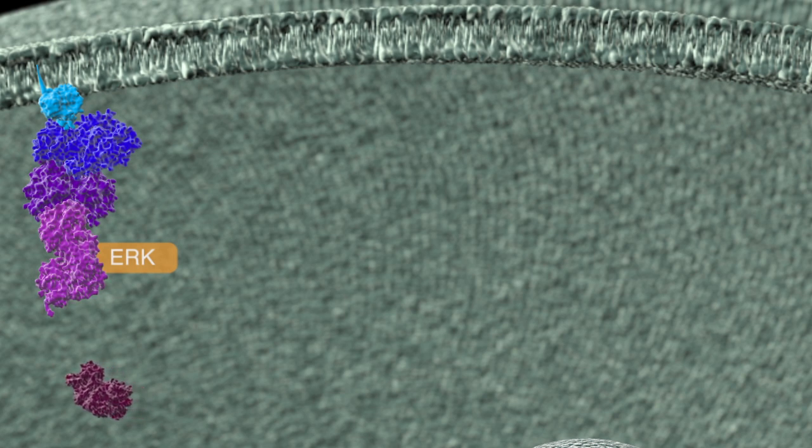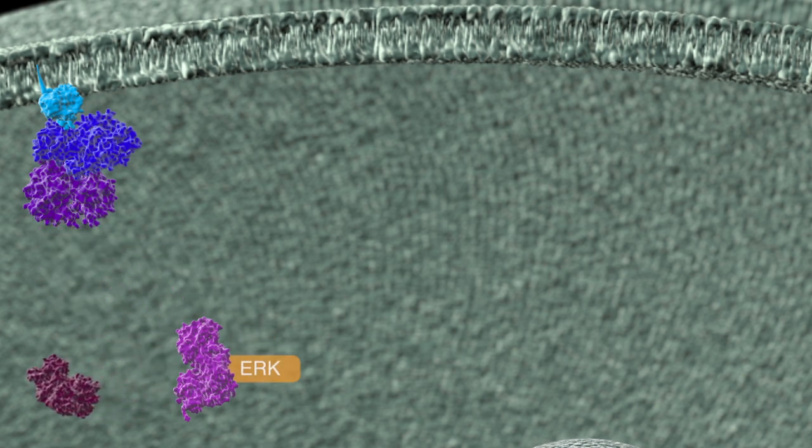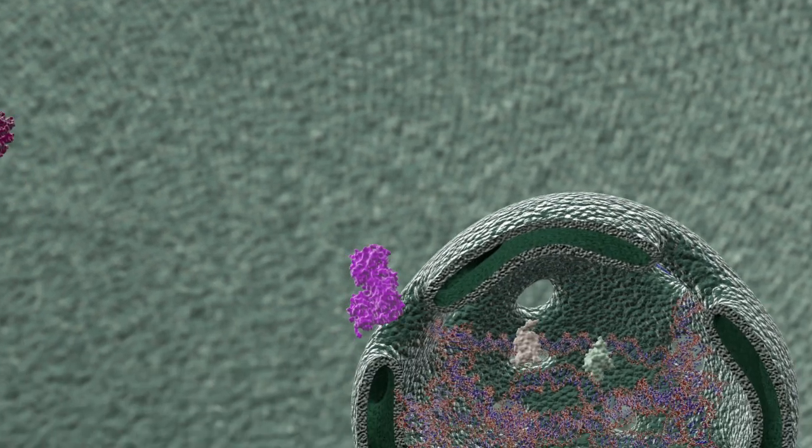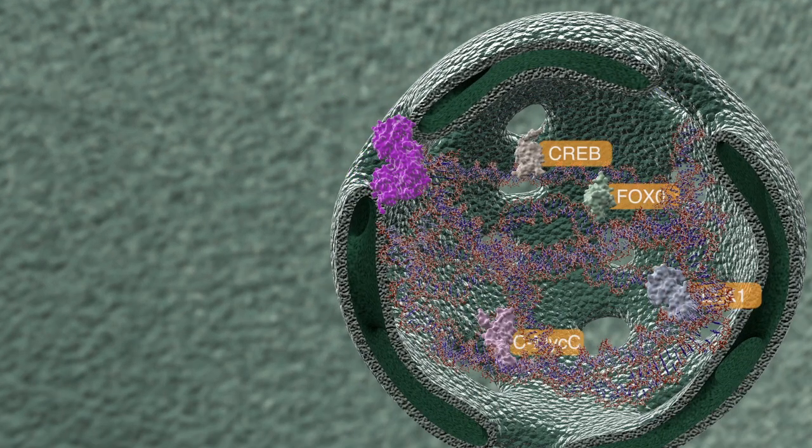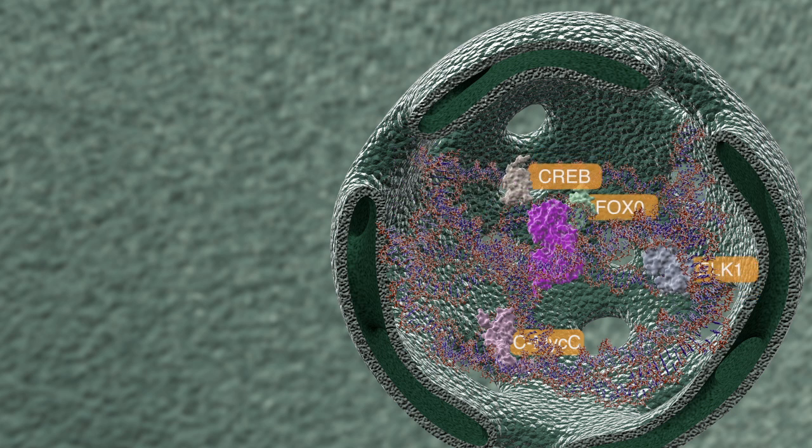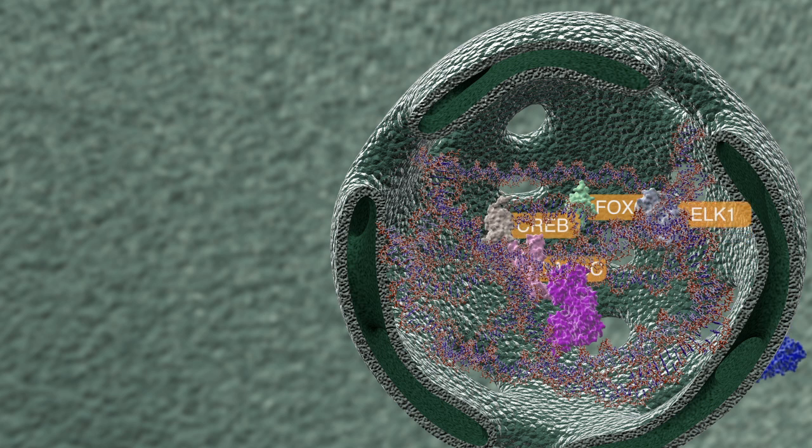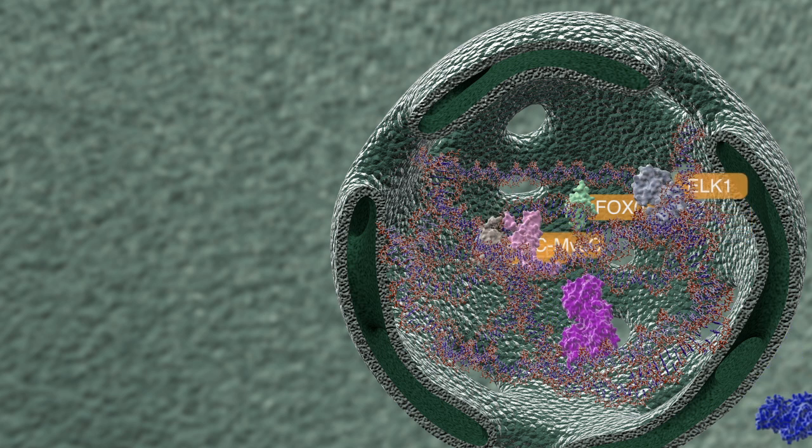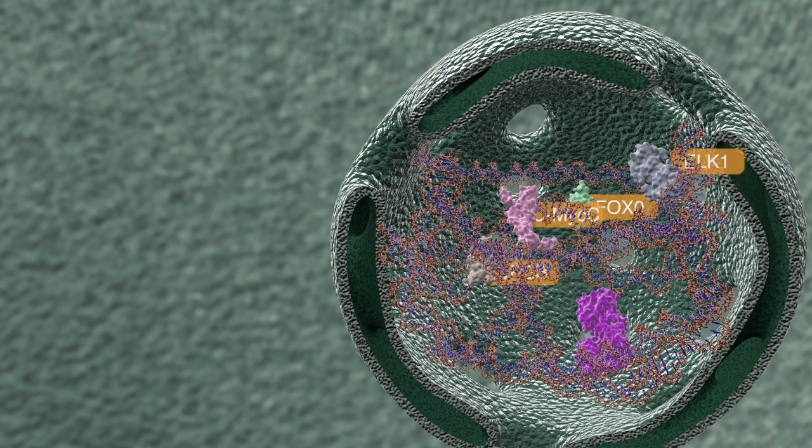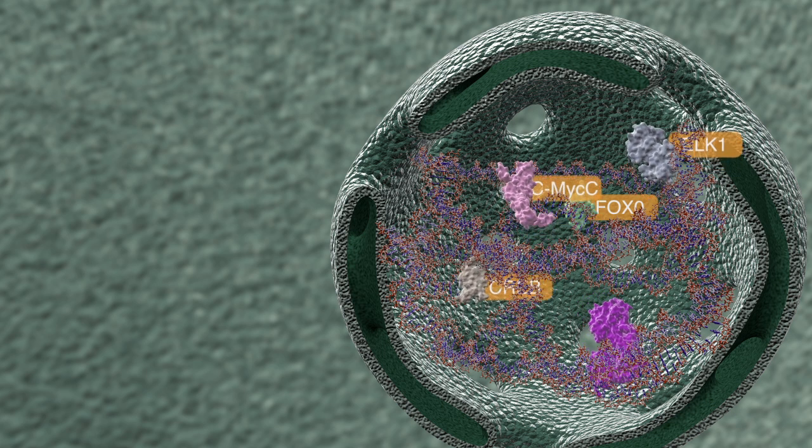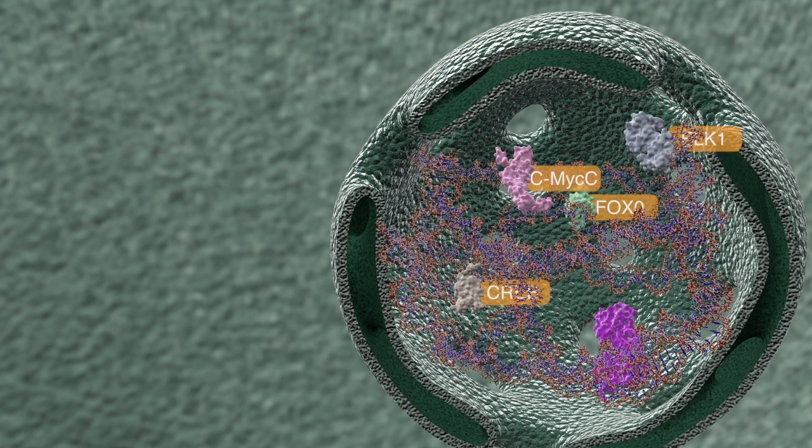These kinases are serine-threonine kinases that phosphorylate a variety of effector molecules. Once they are dually phosphorylated by MEK1 or MEK2, ERK1 and ERK2 can enter the nucleus to interact with the FOXO, ETS, and MYC family transcription factors, among others, to influence the activity of genes involved in the cell cycle, growth, and metabolism.